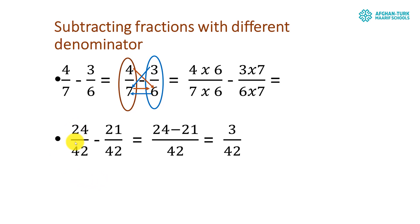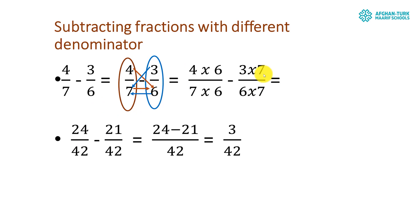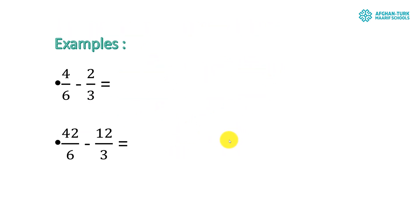Now we move to subtracting fractions with different denominators. The rule is the same as for addition — as you can see: 4 over 7 minus 3 over 6. We multiply both fractions — the numerator and denominator of the first by the second denominator, and the second by the first denominator. After multiplication, we subtract and get the answer. I will solve one for you, and the next one is your homework.